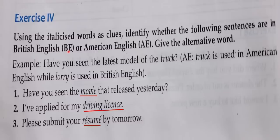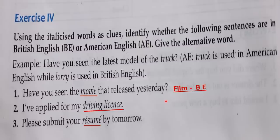Next exercise: using the italicized words as clues, identify whether the following sentences are in British English or American English, and give the alternative words. For example: 'Have you seen the latest model of the truck?' — truck is American English; lorry is the British alternative. 'Have you seen the movie that released yesterday?' — movie is American English; film is the British alternative. 'I have applied for my driving license' — driving license is British English; transportation license is the American English alternative.